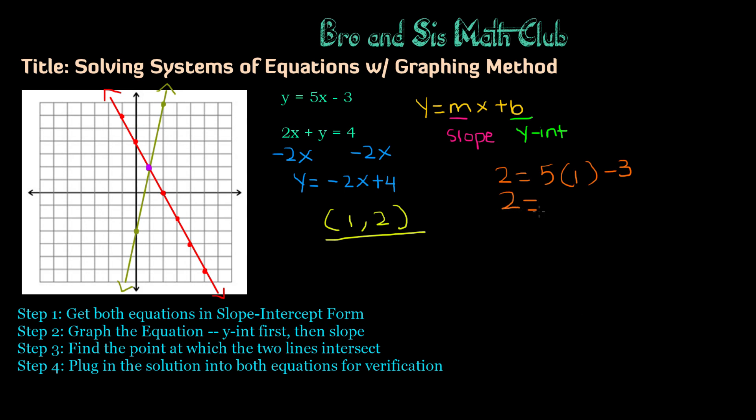And then it would be 2 equals 5 times 1, which is 5, minus 3, which is 2. And so that works out. And then for our second equation, we have 2x plus y equals 4, which would be 2 times 1 plus 2 equals 4. And we know that 2 times 1 is 2 plus 2 is 4. And so that works out as well. Our answer is correct.